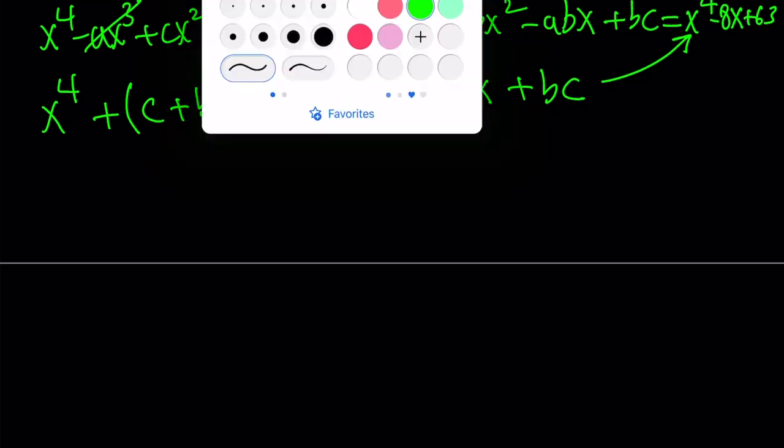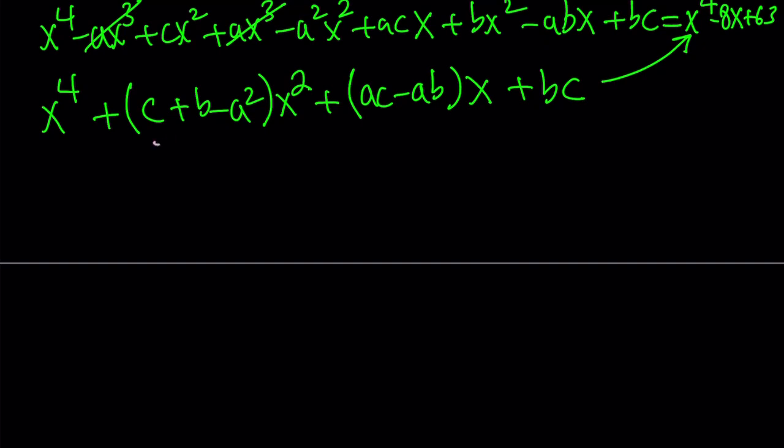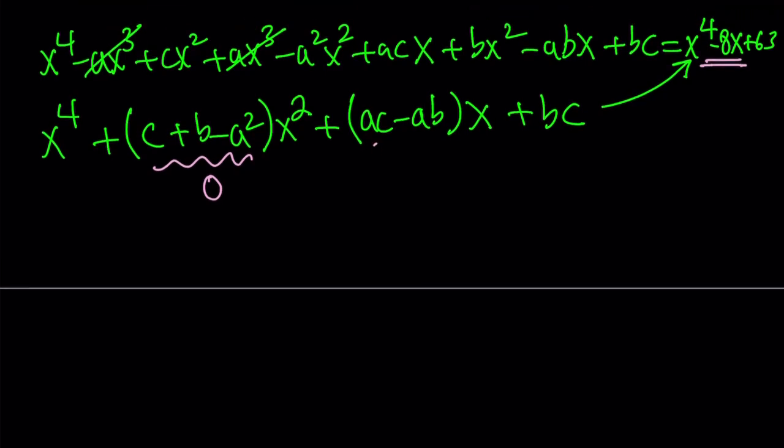By setting them equal to each other as polynomials we notice that the coefficient of x squared needs to be 0 because there is no x squared here. And then the coefficient of x needs to be negative 8 because that's what it is on the right hand side. And bc is a constant term and that needs to equal 63.